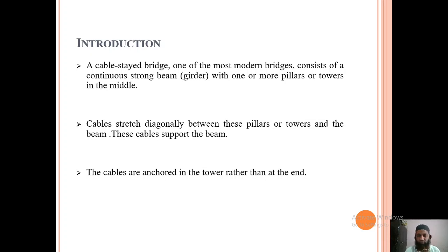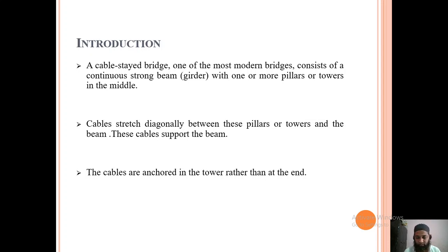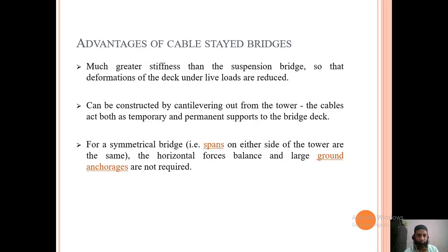A cable-stayed bridge is one of the most modern bridges. It consists of a continuous strong beam called a girder — a large beam — with one or more pillars or towers in the middle. The cables rest onto these pillars or towers and stretch diagonally between them, supporting the beam. The cables are anchored in the tower rather than at the ends, and they hold the slab over which traffic runs.